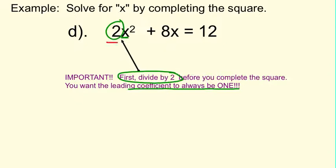So I'm going to have to divide this by 2 and that by 2 and this by 2. So it looks like this: x squared plus 4x equals 6.